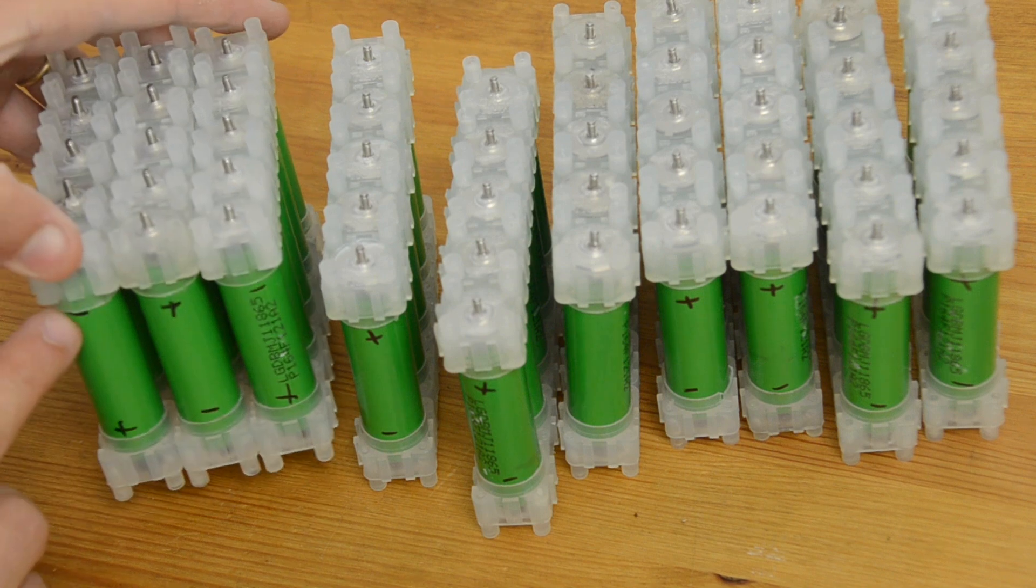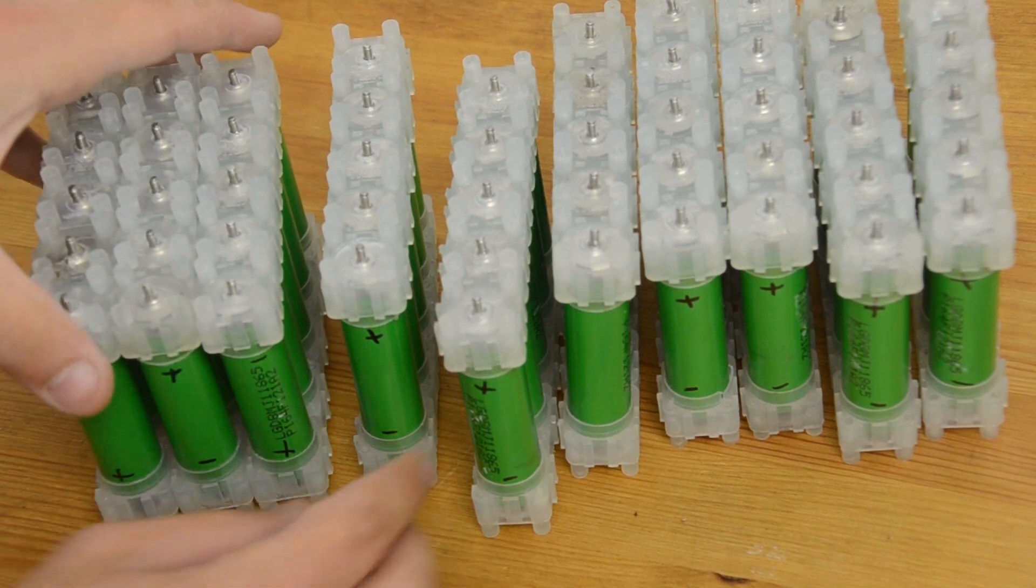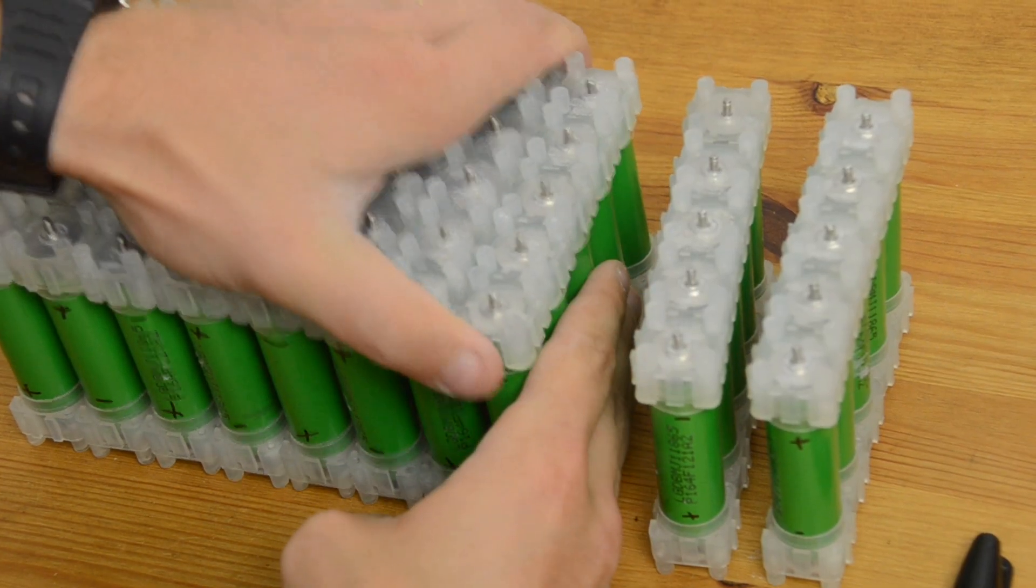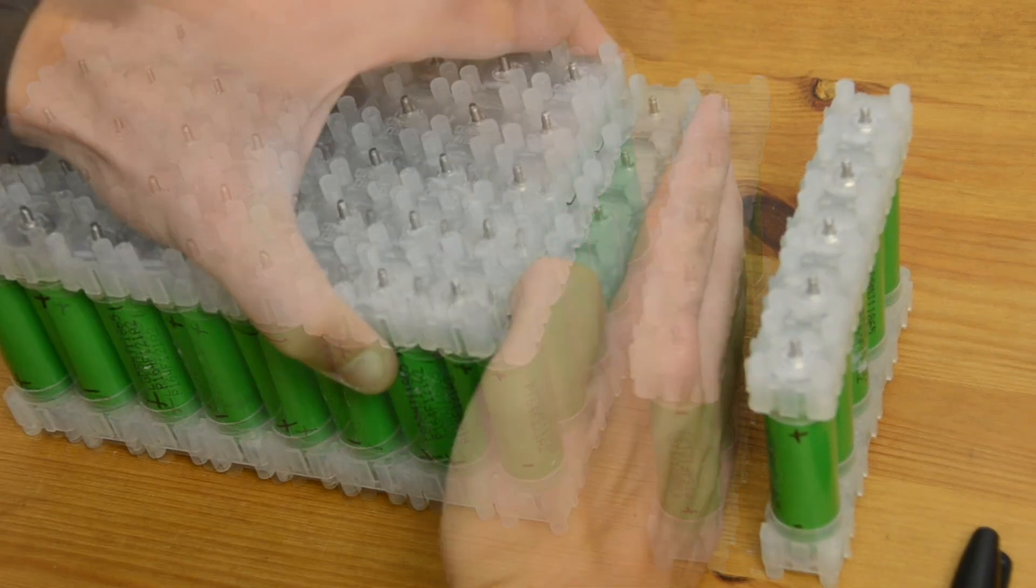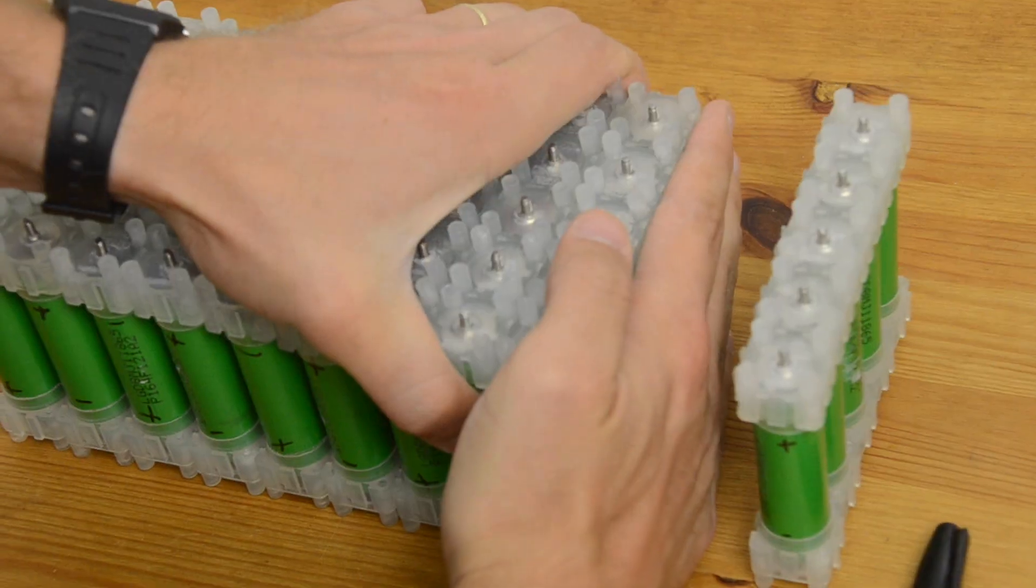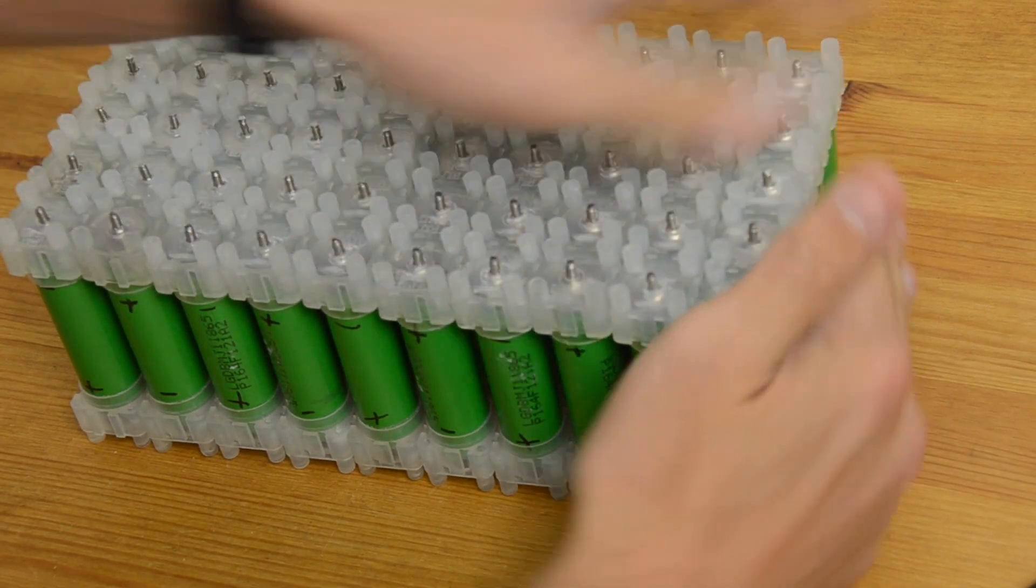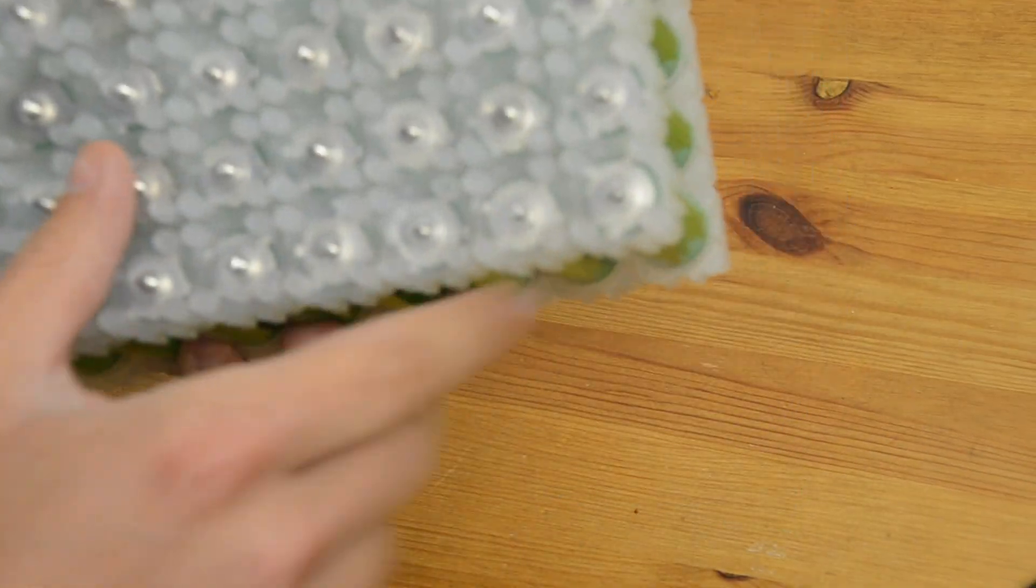Remember I'm going negative, positive, negative, positive. Alternating the top with each parallel group. And I'll just continue down the pack in the same way. Sliding each parallel group together. Always alternating positive, negative. Until I get all of the parallel groups together into one big pack. And remembering to check the bottoms as well.